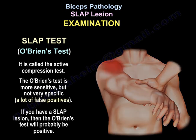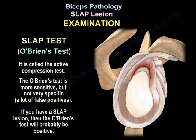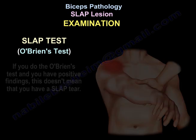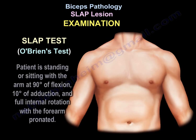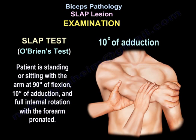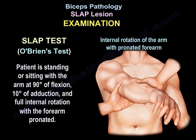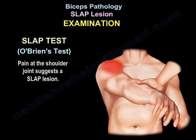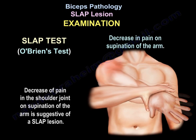If you have a SLAP lesion, the O'Brien test will probably be positive. However, if the O'Brien test is positive, it doesn't necessarily mean you have a SLAP tear. To perform the O'Brien test: the patient stands or sits upright with the arm at 90 degrees of flexion and 10 degrees of adduction. The examiner applies pressure to the forearm and instructs the patient to resist the downward force. You can see internal rotation of the arm with the pronated forearm. Pain at the shoulder joint suggests a SLAP lesion, and a decrease of pain on supination of the arm is also suggestive of a SLAP lesion.